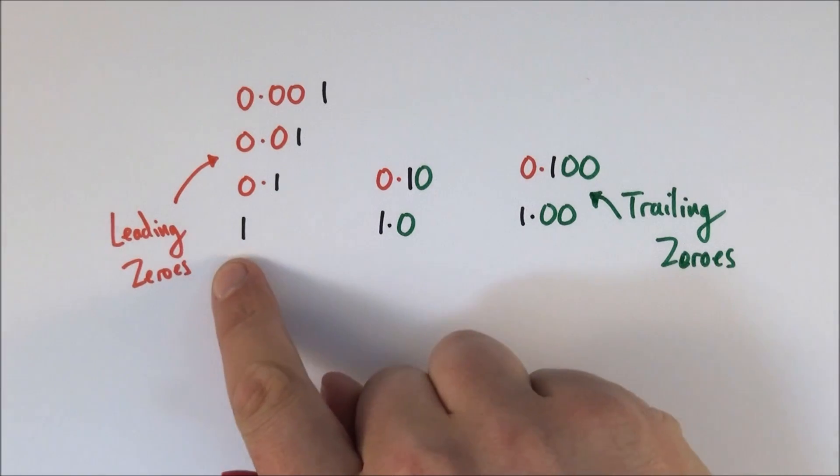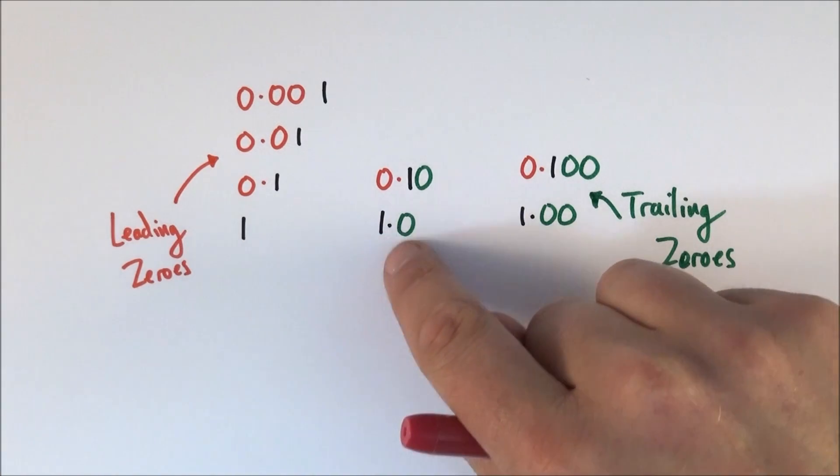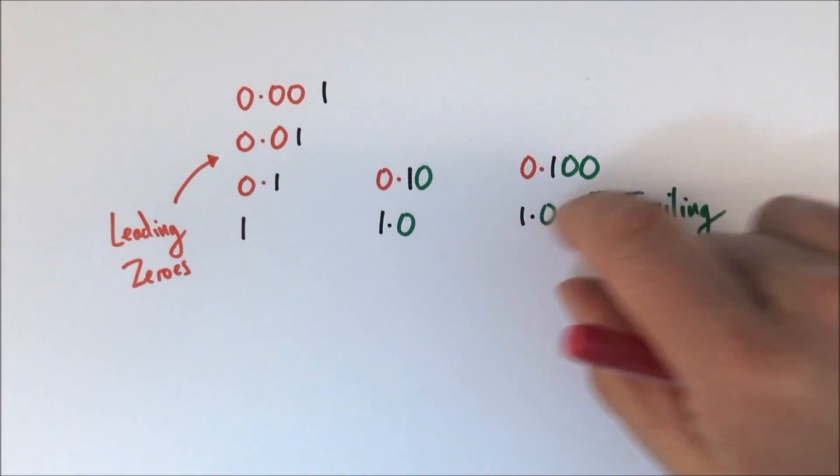Now what this means is if you have the number one just like this that's just one significant figure, if you have 1.0 that's two significant figures and 1.00 is three. We can see that as we have more decimal places after that figure then we tend to have more significant figures.